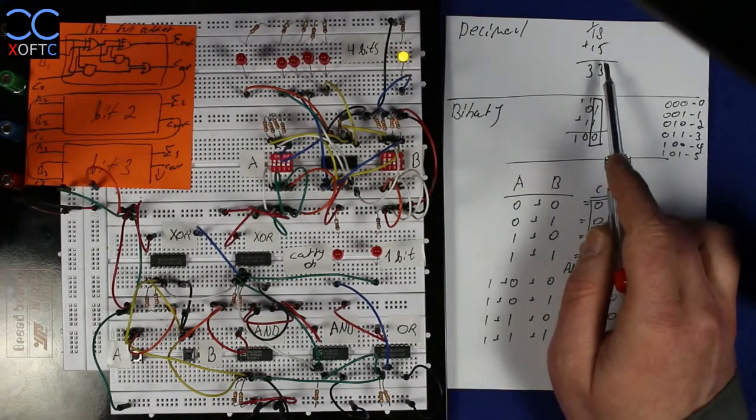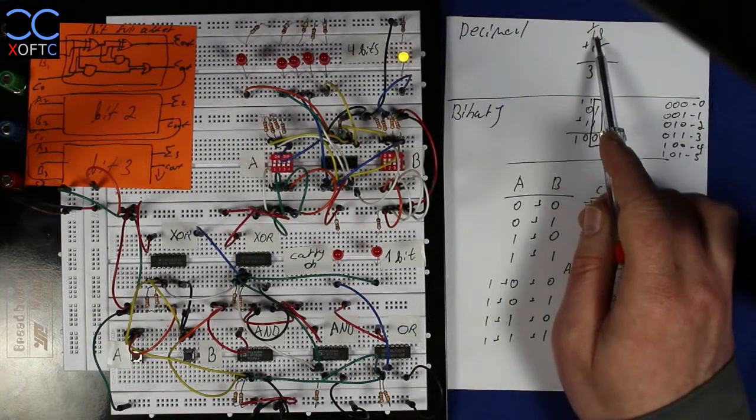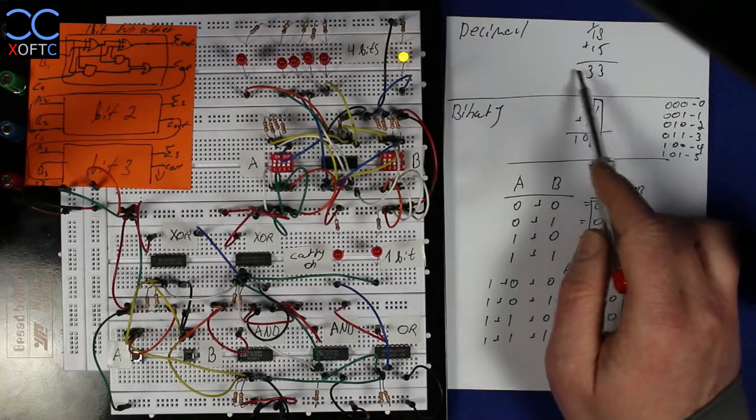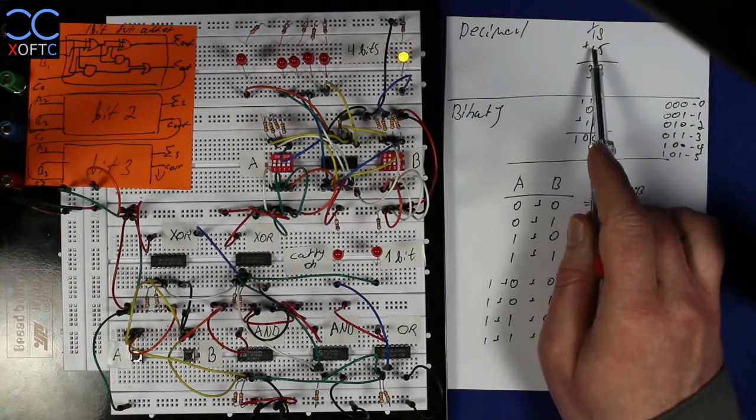I will write a 3 and I will have a carry-on of 1. And then 1 plus 1 plus 1 equals 3. And that gives us 33. And that is the sum of 18 plus 15.